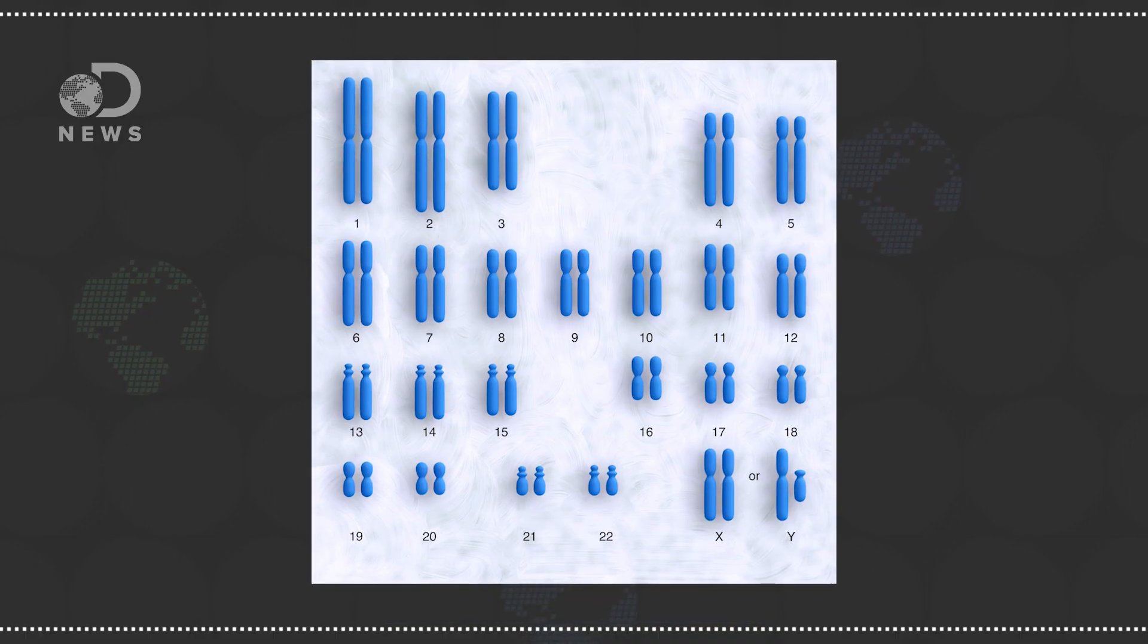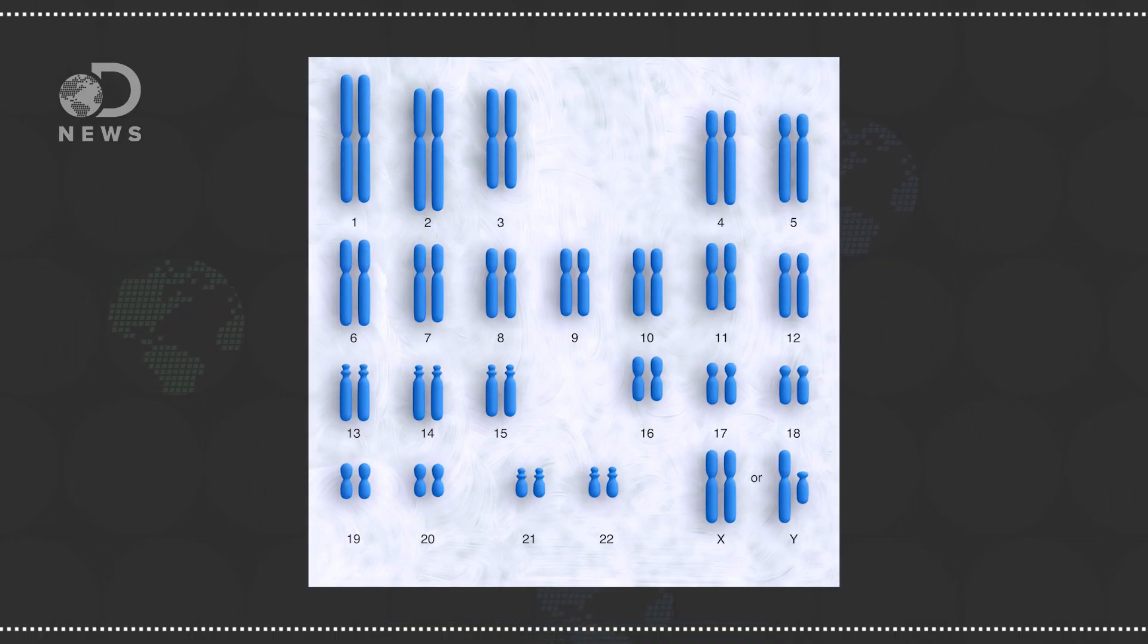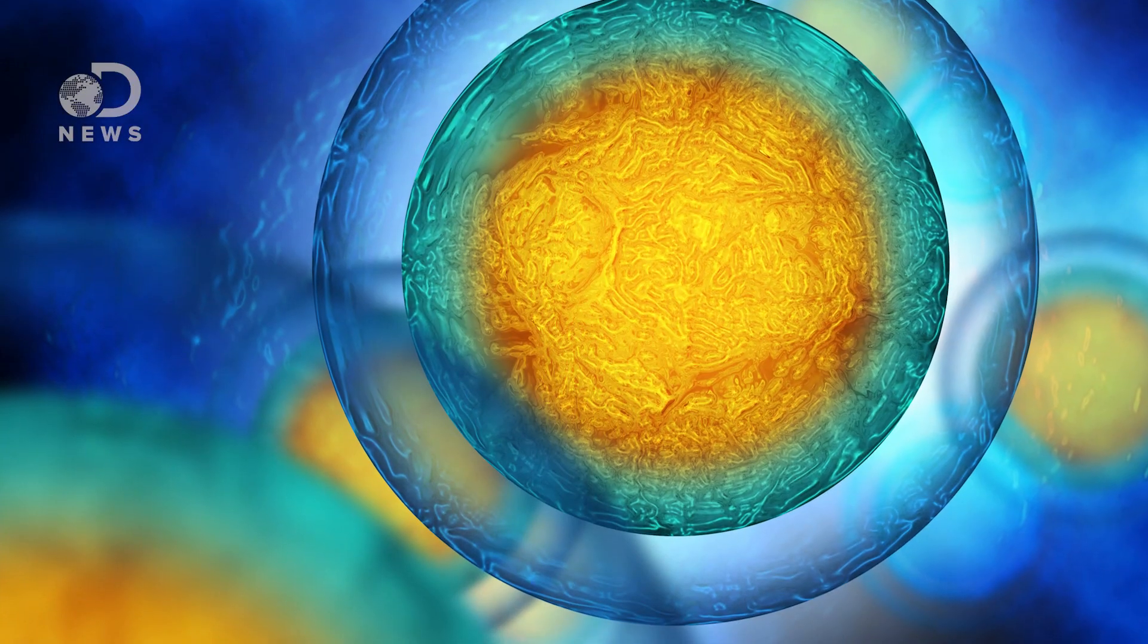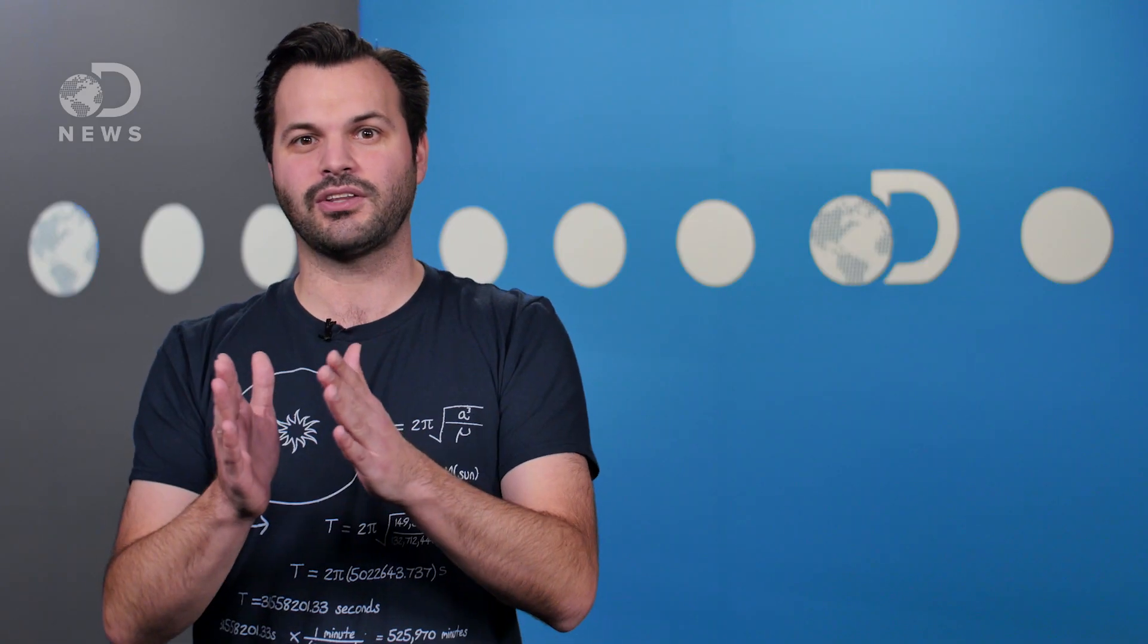Humans require 46 chromosomes, or packets of DNA. Mom and Dad each have 23. So combined, the genetic information inside the chromosomes create the plans for a full human. So yes, you could take two eggs, or two sperm, and mush them together to get that total of 46 chromosomes.